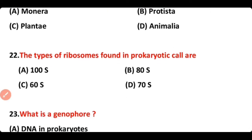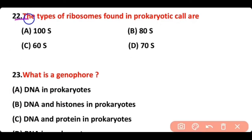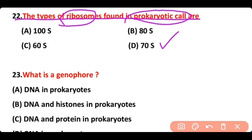Question number 22. The type of ribosome found in prokaryotic cells — options are 100S, 80S, 60S, or 70S. The correct answer is option D — 70S ribosomes are found in prokaryotic cells.